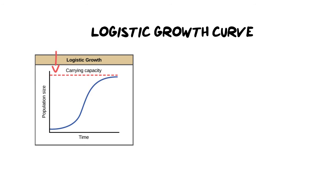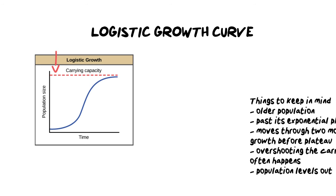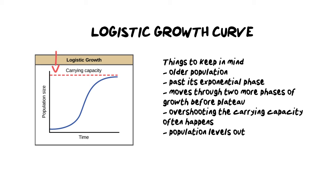When explaining logistic growth, keep in mind that this is an older, established population that has gone through its exponential growth phase and moved into a more stable one. Because it's past its exponential phase, it's not using up all resources rapidly and is living very close to the carrying capacity. The plateau — where the graph levels out and becomes flattened — is due to the carrying capacity, which is created by environmental resistance.